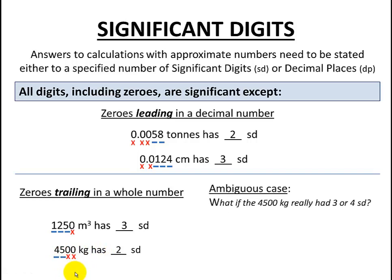Now there are some ambiguous cases. What if the 4,500 kilograms really had three or four significant digits? How would we show this? So what we do is we use a special symbol called a tilde. It's this sort of little curvy thing that we see on our keyboard. So if I wanted to show that 4,500 kilograms had three significant digits, well, the 4 and the 5 are non-zeros, so they just automatically count.